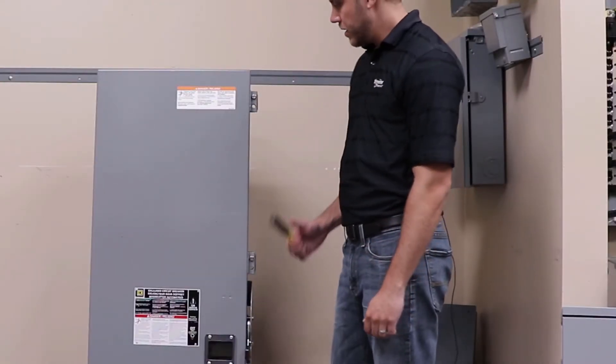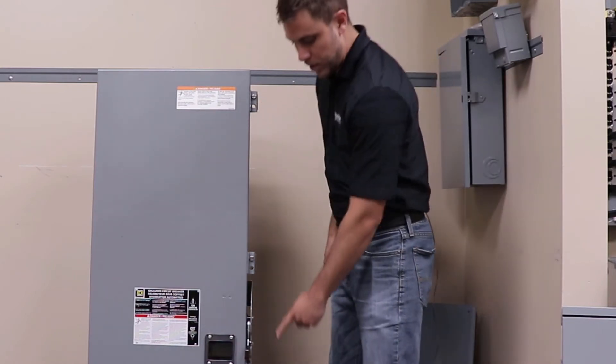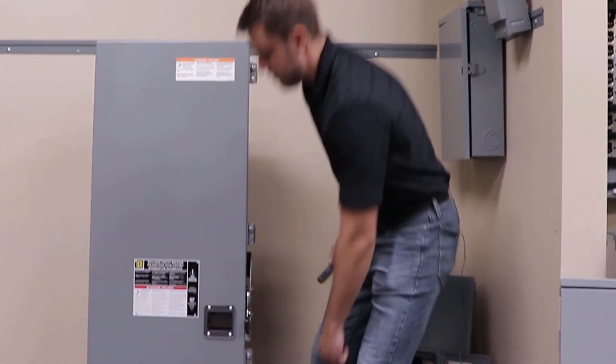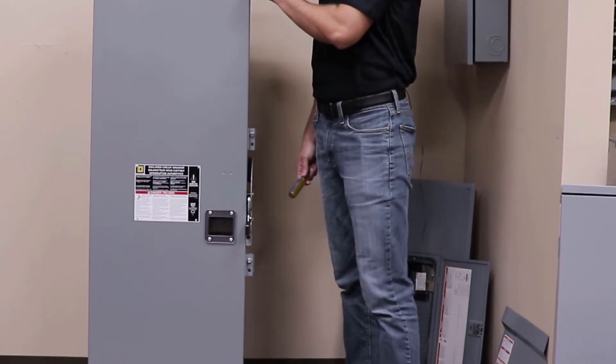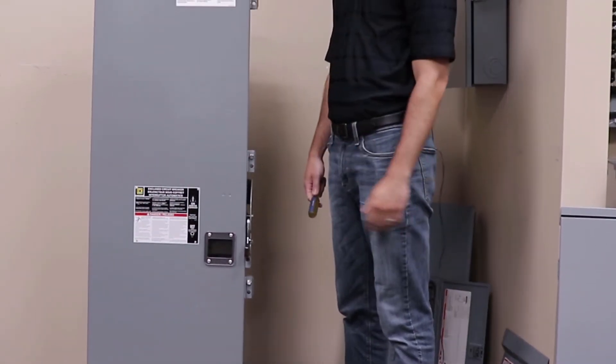With the handle in the off position there are four screws which need to be loosened. These screws help tighten down the door since the NEMA 12 enclosure is gasketed.